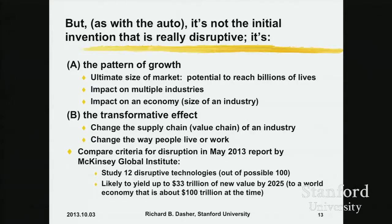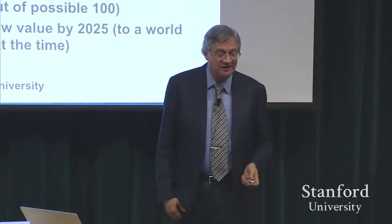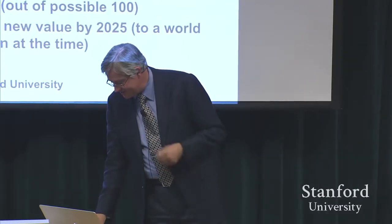In the McKinsey Global Institute book, they define disruptive innovations based on the ultimate size of the market — the potential for reaching hundreds of millions or billions of people — the impact on multiple industries, the impact on an economy itself, and what percentage of an economy is likely to be involved with that new technology. They also looked at the transformative effect: a new technology that really changes the supply chain of an industry or changes the way people live or work. They took 100 candidate technology areas and selected 12 for the study.